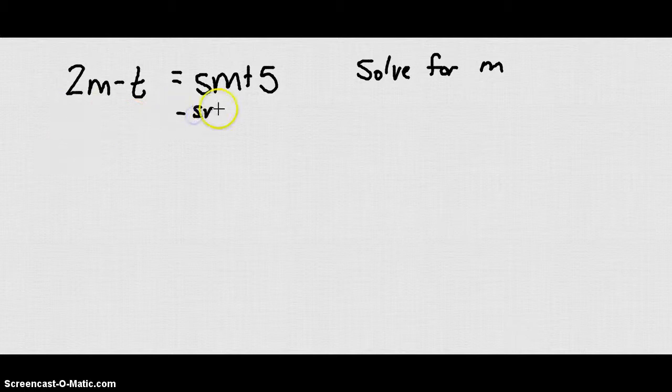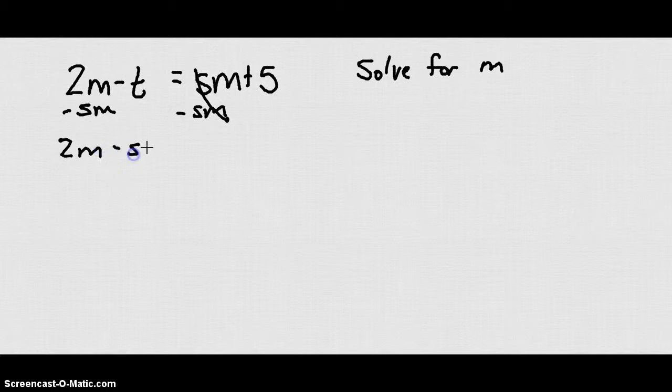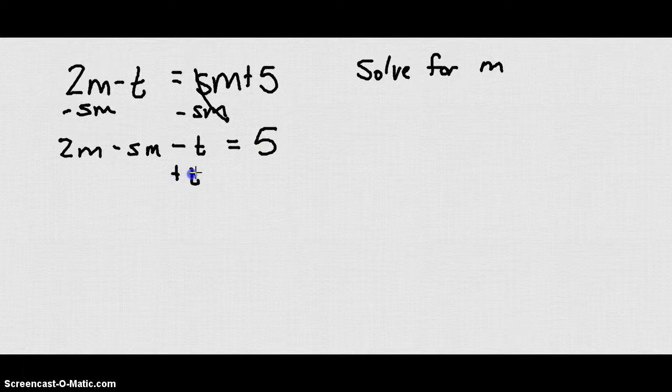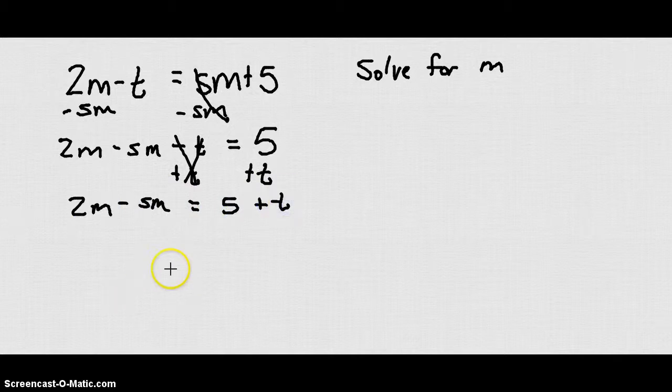So let's take sm from both sides. We get 2m minus sm minus t equals 5. Now let's add this t to both sides. We get 2m minus sm equals 5 plus t. Now the m terms are on one side and the non-m terms are on the other side.